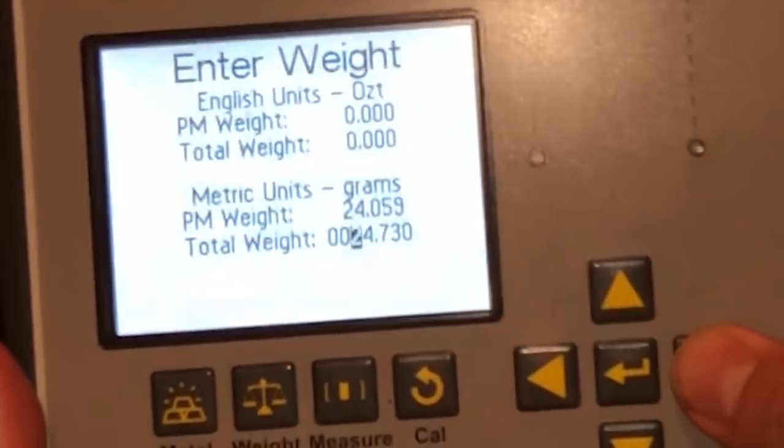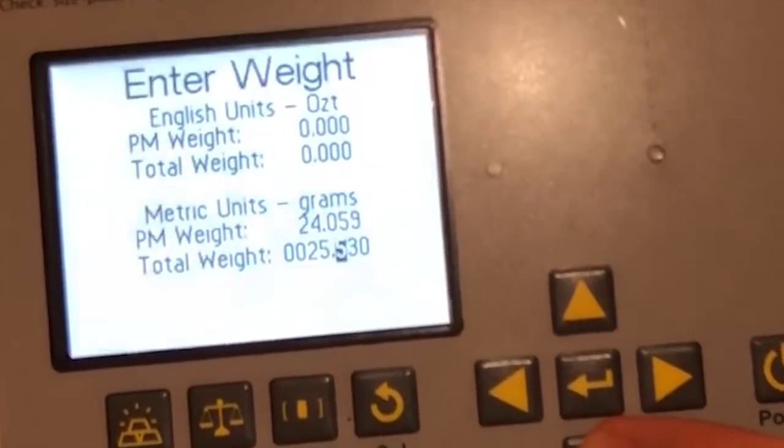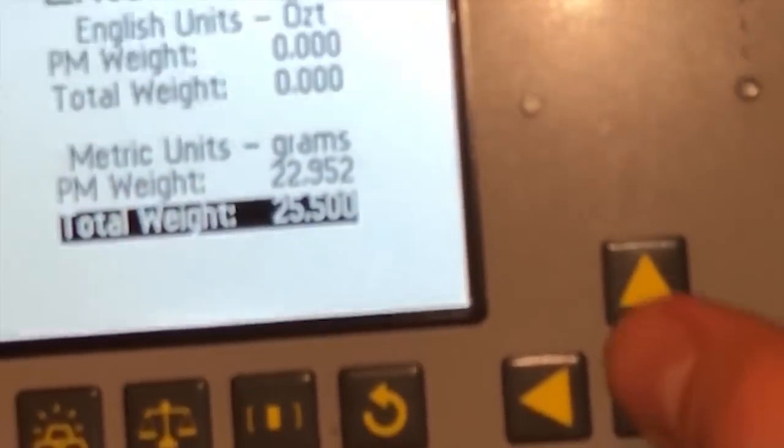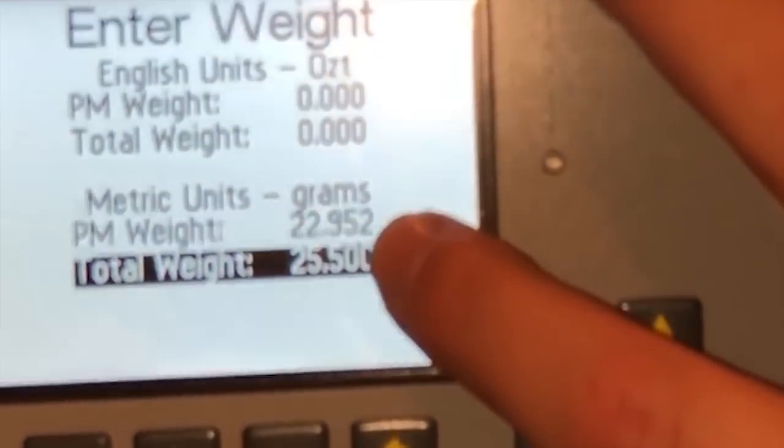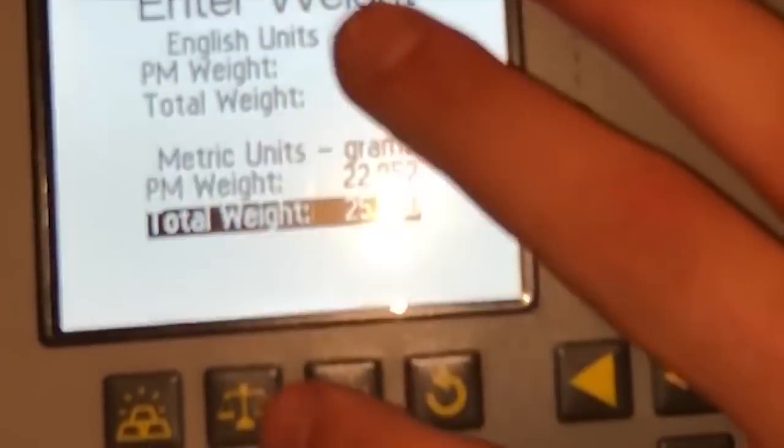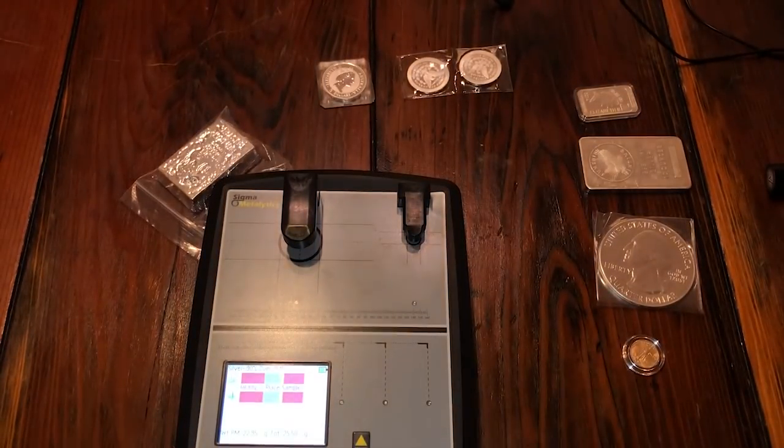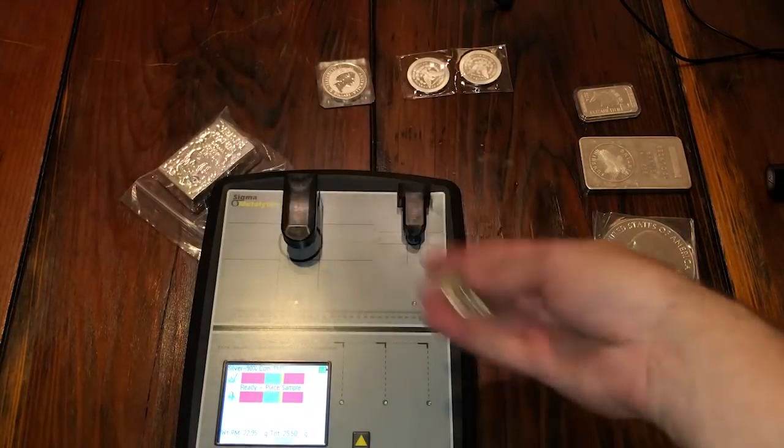That includes the normal weight of the coin. When you do 12.5 here and you enter it, it automatically tells you how much of the weight is going to be precious metals and you just click back here to measure and we're ready to go.